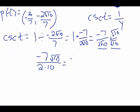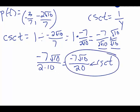So when we simplify this, move over your numerator and the denominator 2 times 10 is 20. Check to see if anything else simplifies. 7 over 20 does not reduce. The square root of 10 radical cannot be simplified, so this is what cosecant of t is equal to: negative 7 square roots of 10 over 20.